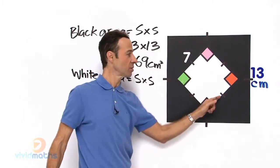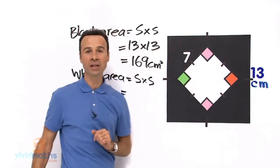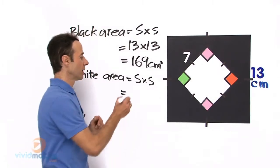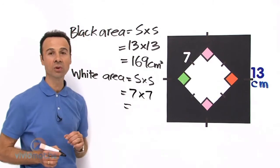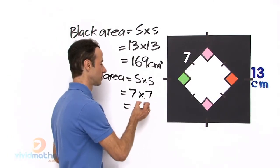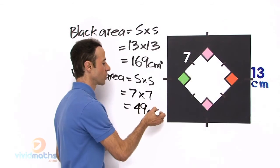Because we know all the little symbolic lines right there, so it is 7 times 7 which equals a grand total of 49cm squared.